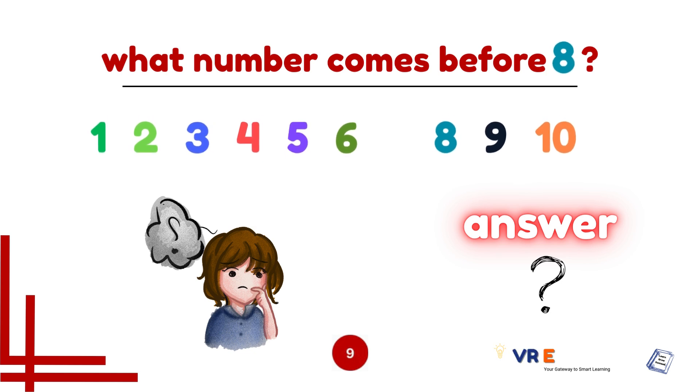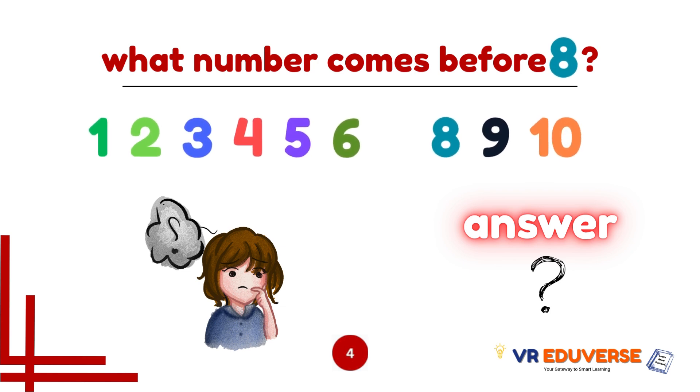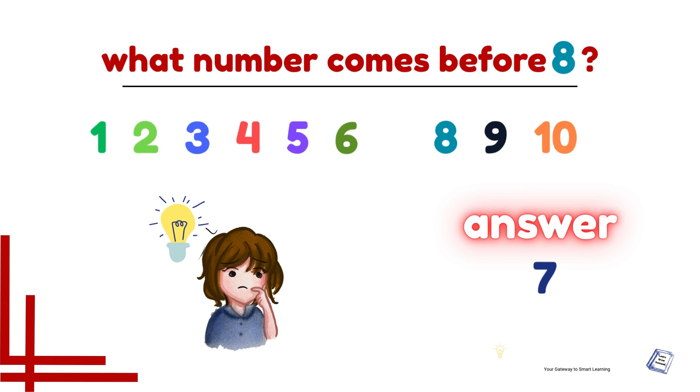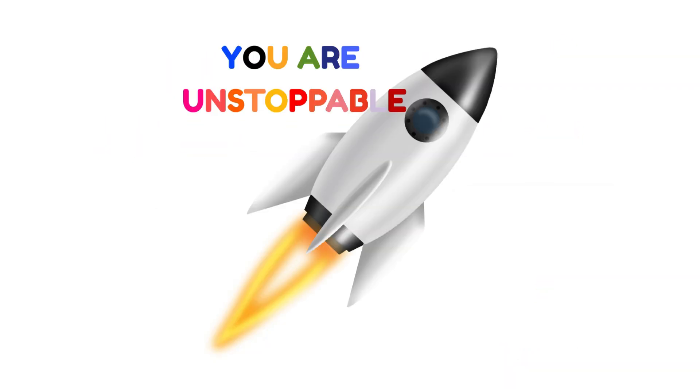What number comes before 8? You got 10 seconds to answer. The answer is 7. Perfect. You are unstoppable. You are faster than a rocket.